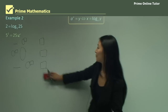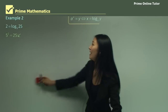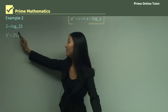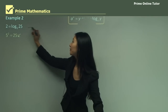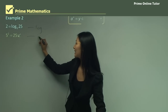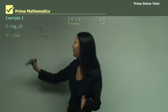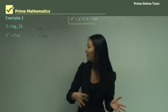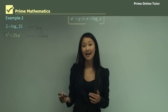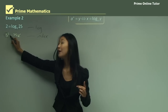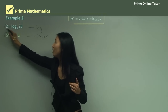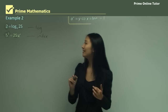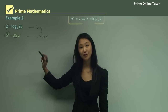In the previous questions we moved from index form to logarithm form. In example 2, we're going to learn how to change from logarithm form back to index form. We have 2 equals log base 5, 25. Since 5 is the base of the logarithm, it becomes the base of the index. The logarithm equals 2, so 2 becomes the index. Then 25 moves over, giving us 5 to the power of 2 equals 25.